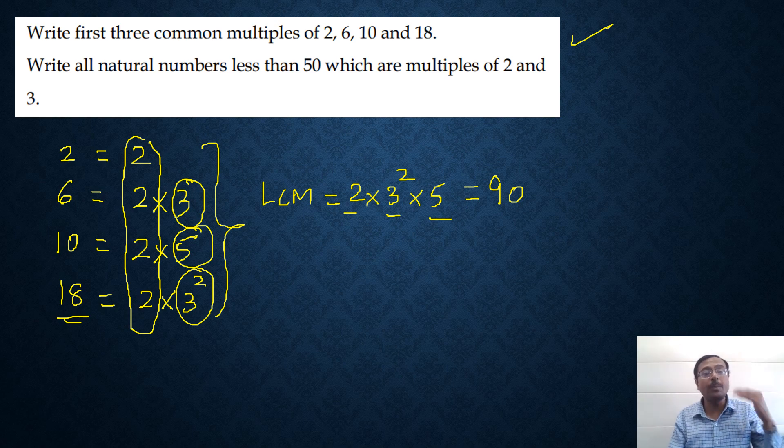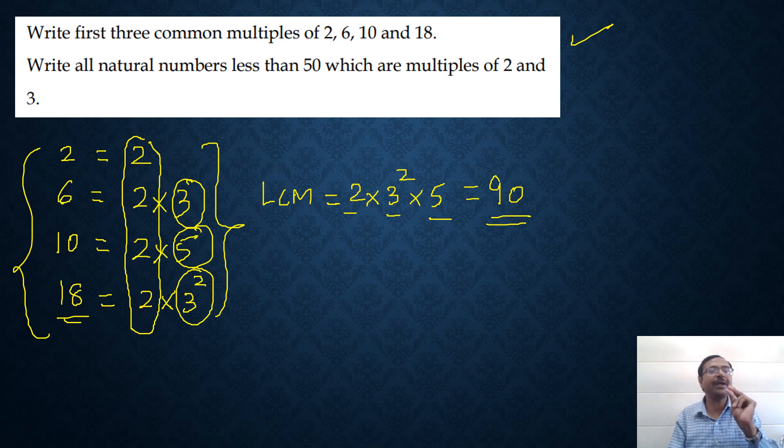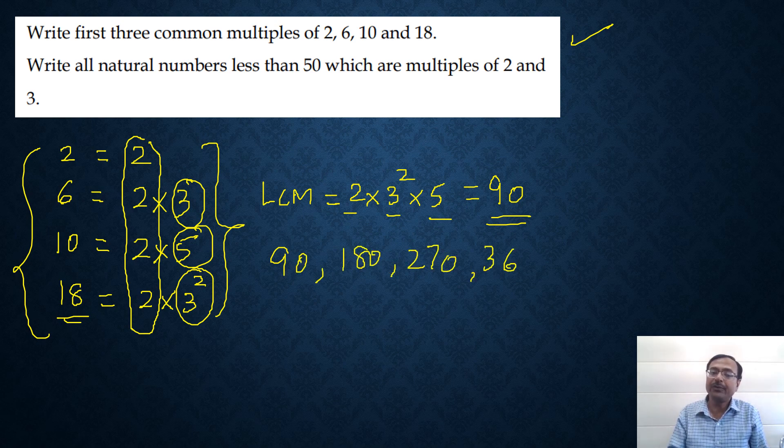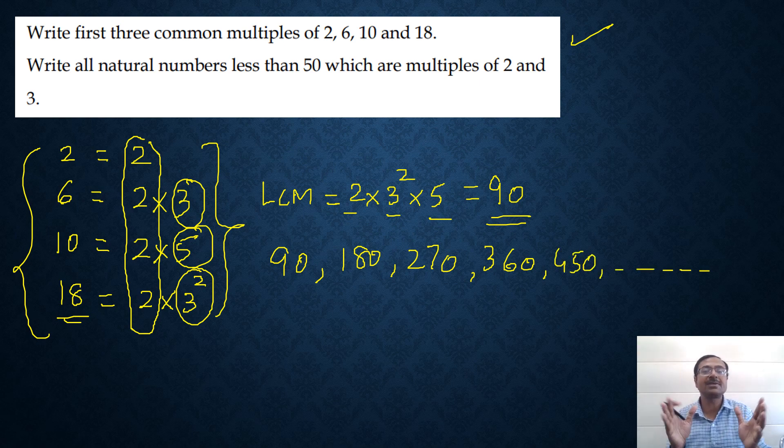Now if you have to write the common multiples of these four numbers, you just write the multiples of 90 and you will have the common multiples of all these four numbers. So what are the common multiples? 90, 180, 270, 360, 450 and so on. You can write any number of common multiples of these four numbers. Just find the LCM and then write the table of that number.